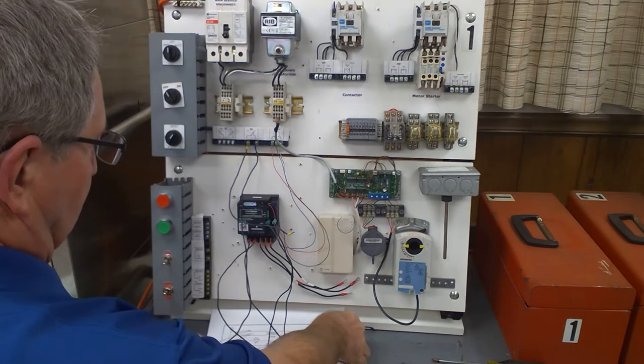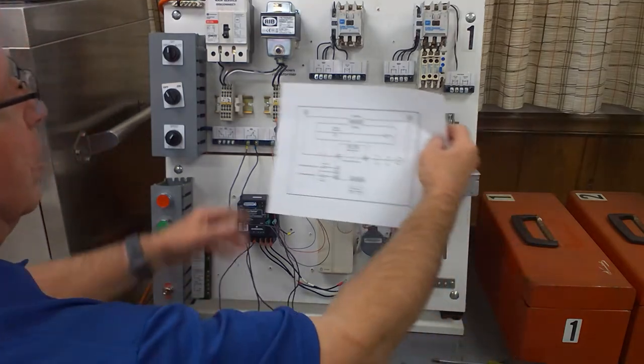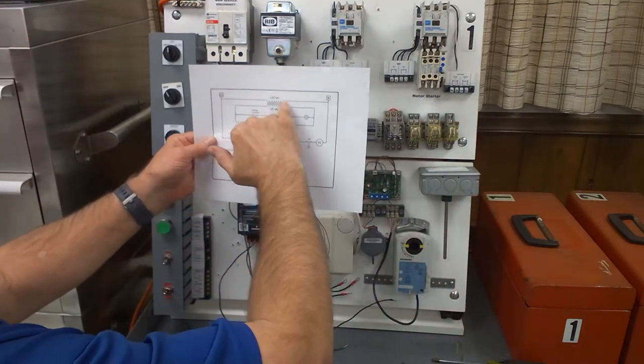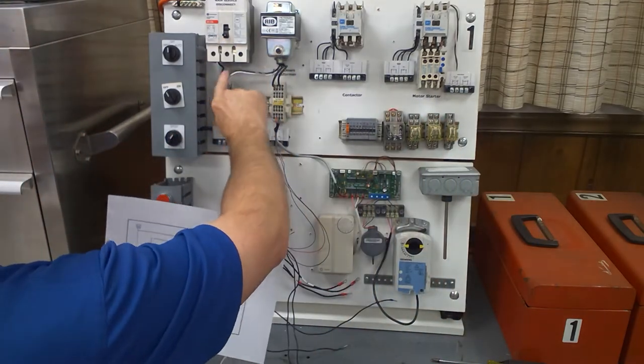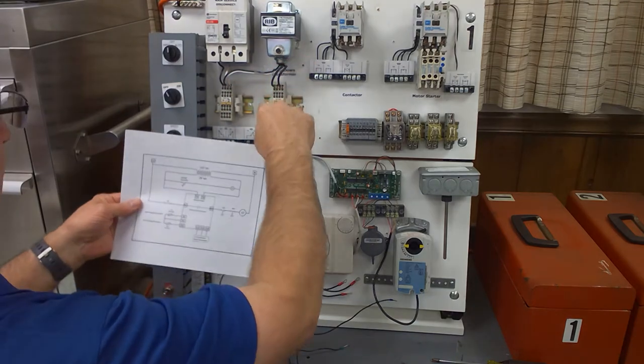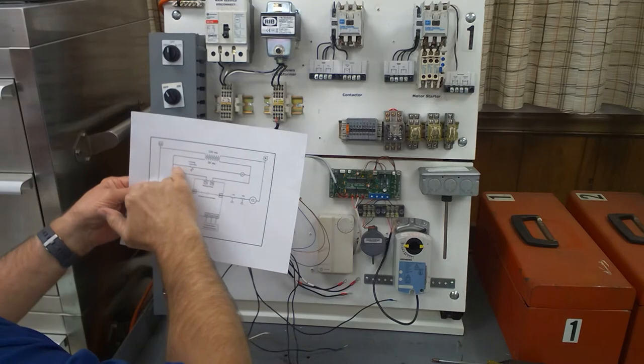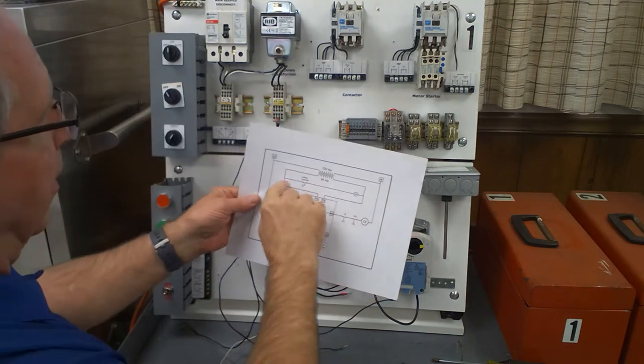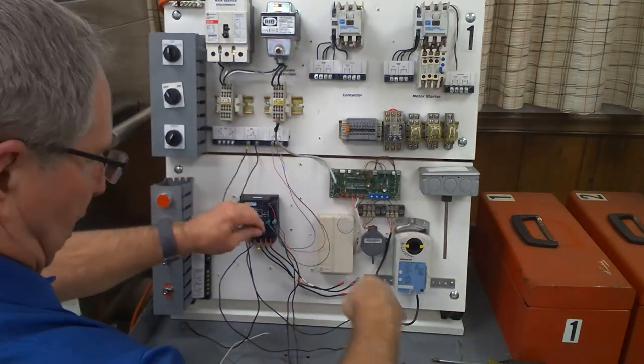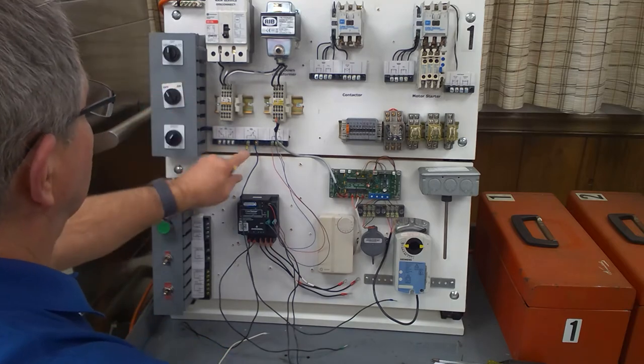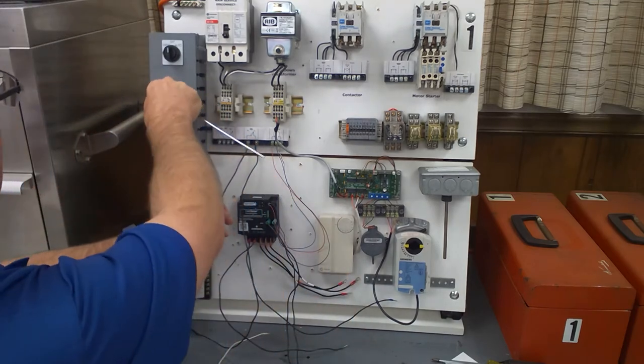When you look at your diagram that you drew, the first thing you see is that L1 goes to the transformer. Here's power coming in, goes to the transformer. Here's the 24 volt terminals. So we're right here.